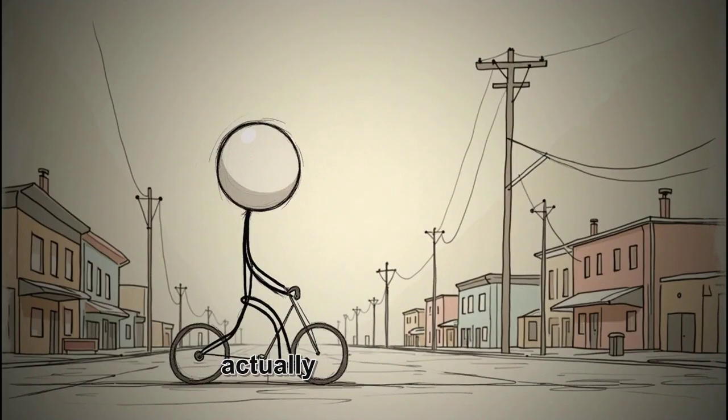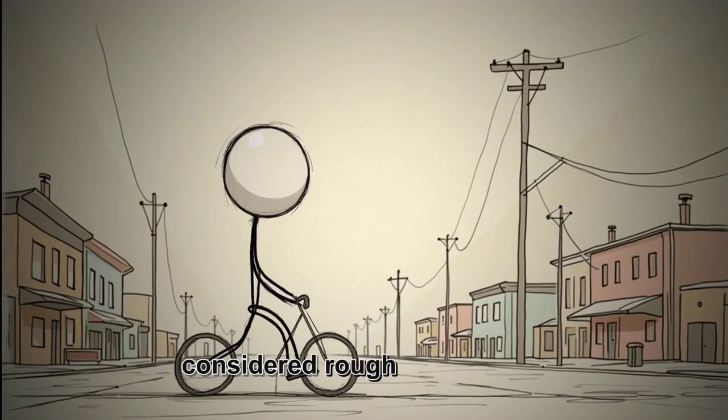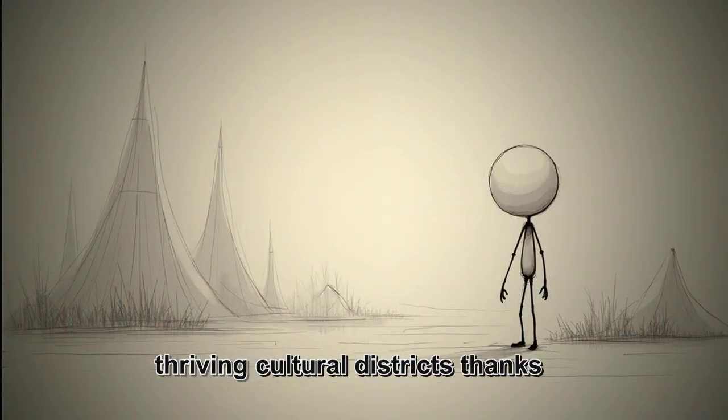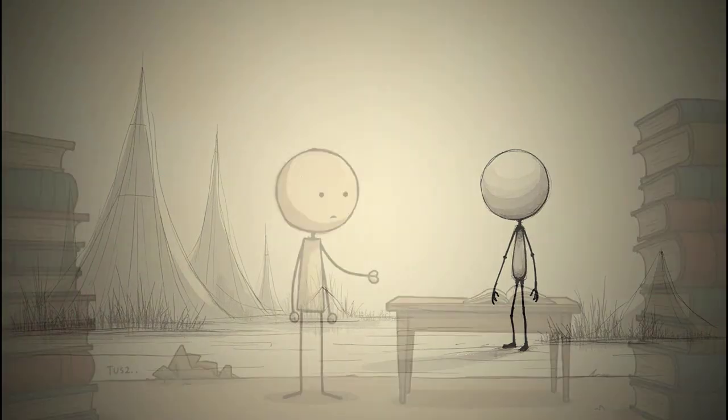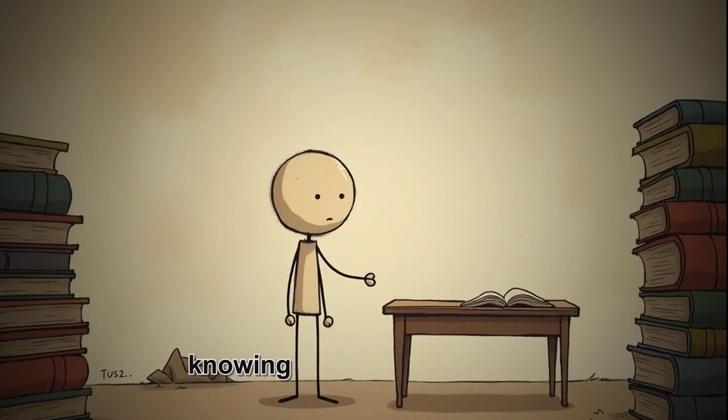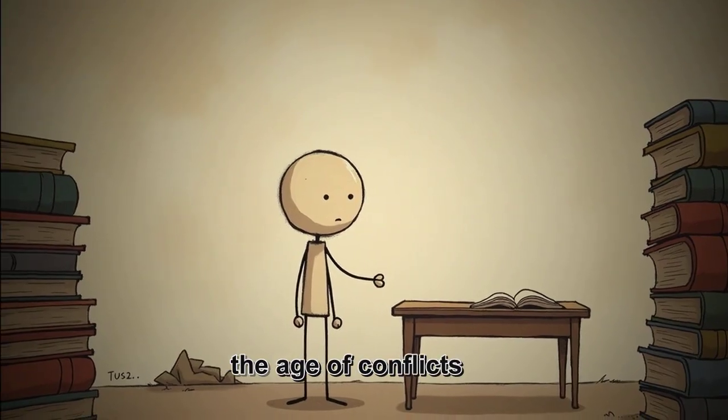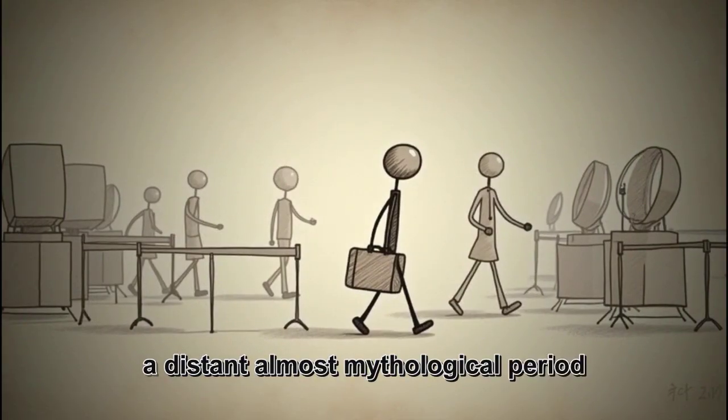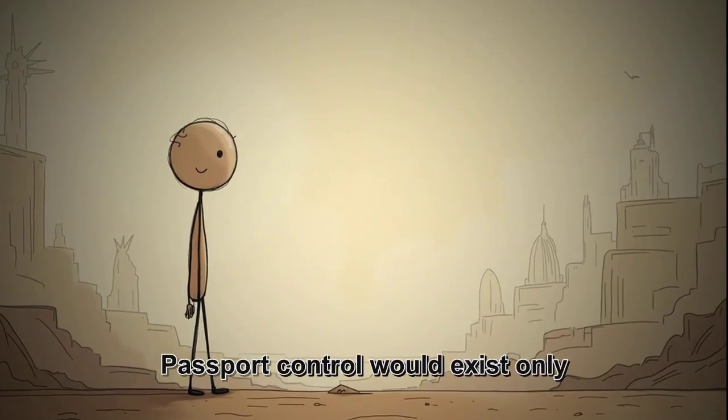So, what would daily life actually look like in this peaceful world? Your morning commute would pass through neighborhoods that were once considered rough, but are now thriving cultural districts, thanks to massive urban renewal projects. Your job might involve working on fusion reactor designs, vertical farming systems, or planning the first permanent lunar settlements. Children would grow up never knowing what a military base looks like or what an air raid siren sounds like. History classes would teach about the age of conflicts as a distant, almost mythological period. Global travel would be frictionless. No visa restrictions. No border guards. No security checkpoints. The TSA would be a historical footnote. Passport control would exist only in museums.